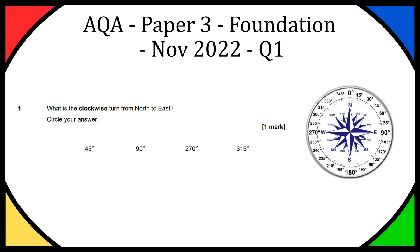Obviously you won't be able to bring this up in your exam, but I think once you learn it it's going to be quite easy to remember. So we need to note that we're facing north and then we're going to be turning east, and we're going to be turning clockwise — so that's to the right. Clockwise means that if you're looking at a clock and the hands spin to the right, that's what clockwise means.